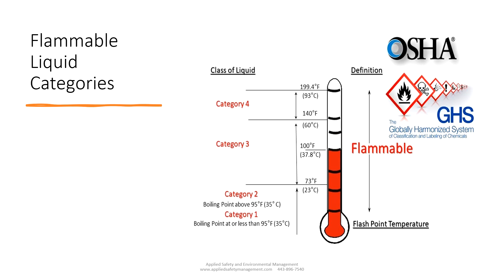When we look at the range of what we have, there are four separate categories. We'll break those down in the next couple of slides. For flammable liquids, we look at both the boiling point and the flashpoint. When we switch over to combustible liquids, it's going to be focused on flashpoint only.